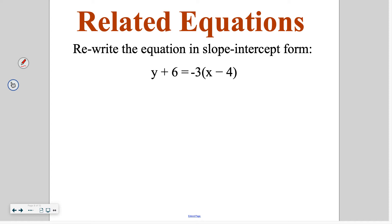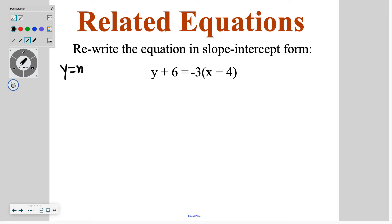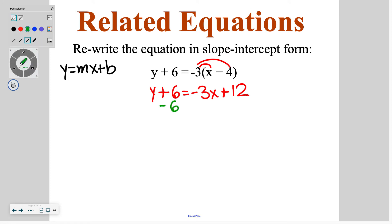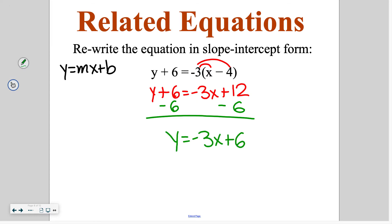Next we're going to take point-slope form and convert into slope-intercept form. Remember that slope-intercept form is y equals mx plus b. There are no parentheses in slope-intercept form, so we use the distributive property again. I've got y plus 6 is equal to negative 3x plus 12 — be careful as you distribute, we've got two negatives so it goes to a positive. The only thing left is to get y by itself, so I subtract 6 from both sides, giving y equals negative 3x plus 6, and that puts us into slope-intercept form.